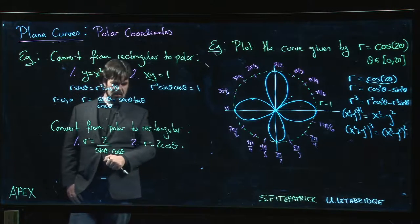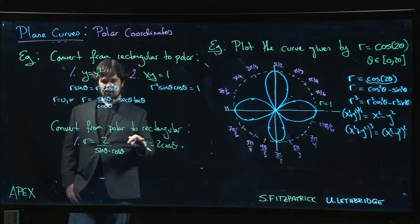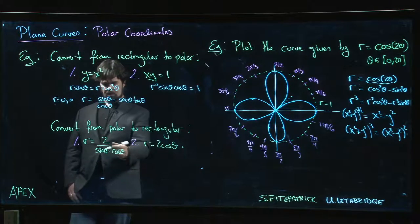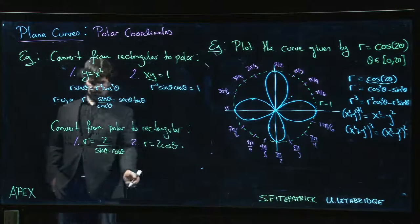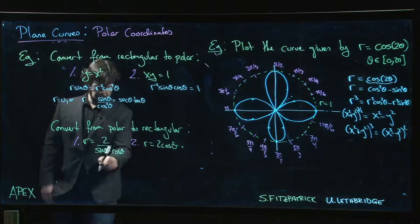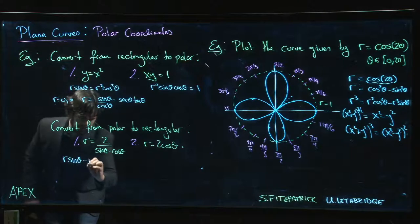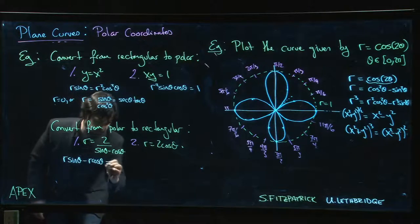Going from polar to rectangular sometimes requires a little bit more inspiration. So we can think about, what do you do here? Maybe the first thing you might try is cross multiply. What do we get? We get r sin θ minus r cos θ equals 2.